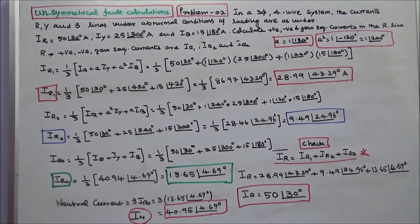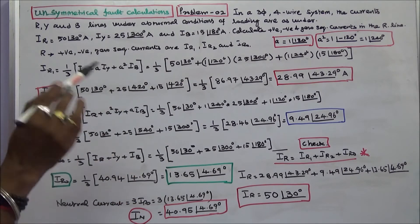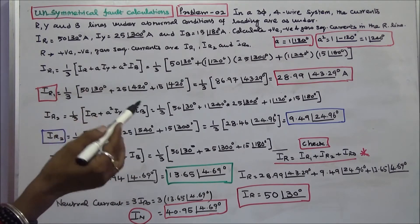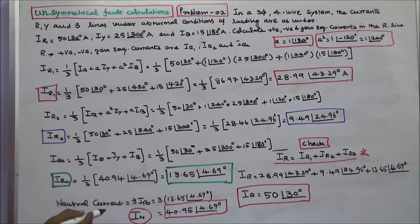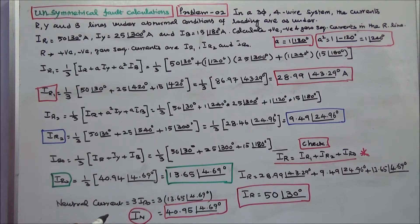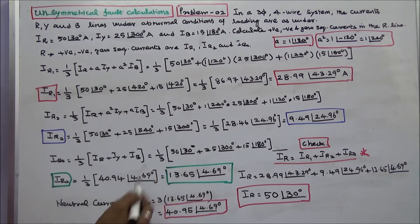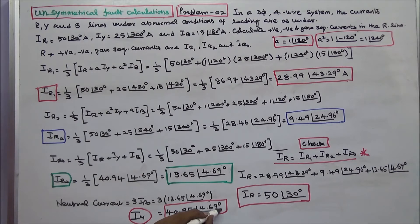Next, we calculate the neutral current. Neutral current is equal to IR plus IY plus IB, or 3 times the zero sequence current. So 3 × 13.65 angle 4.69 degrees equals 40.95 angle 4.69 degrees. This is the neutral current.